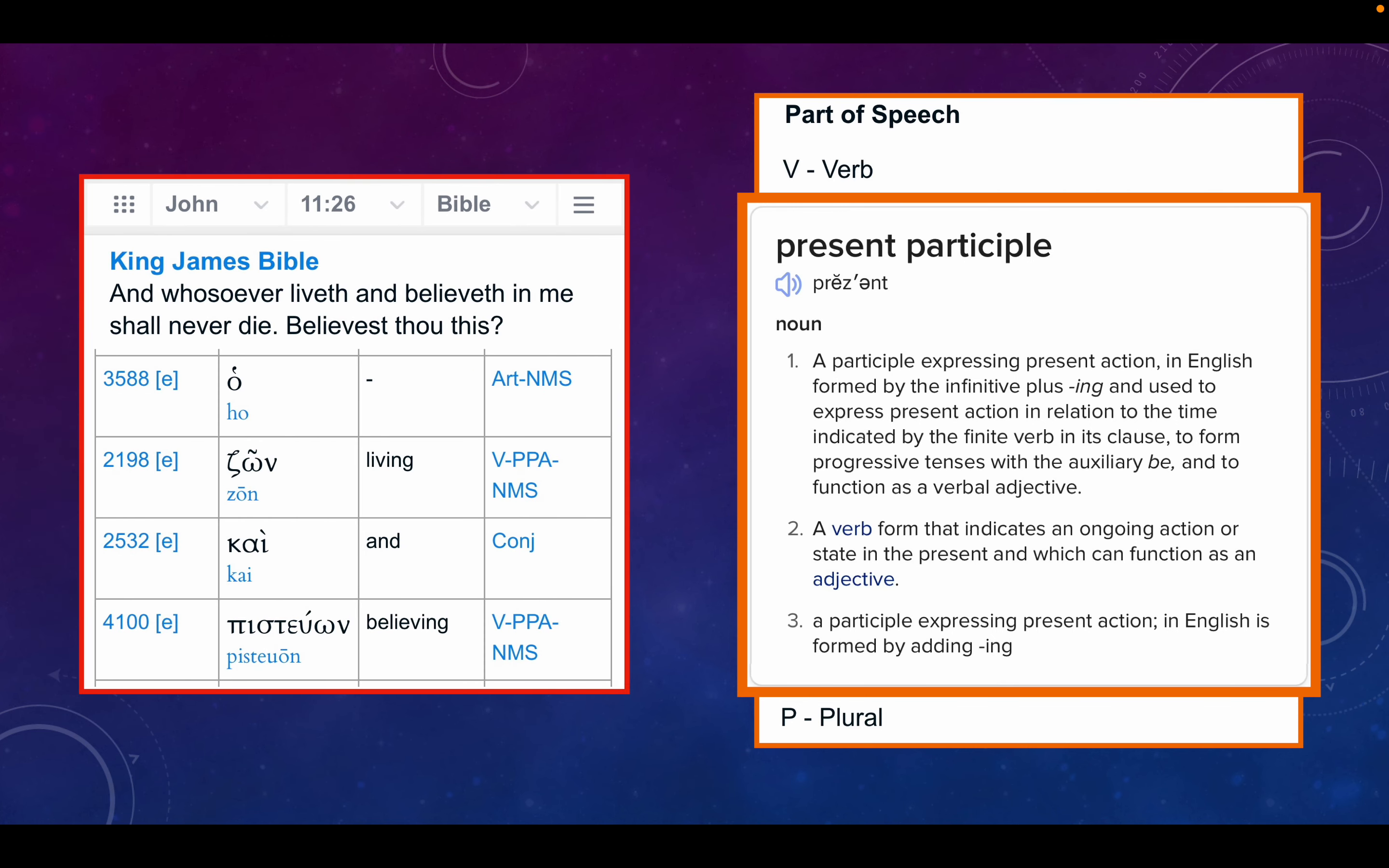John 11:26. And whosoever liveth and believeth in me shall never die. Believeth thou this? O zoin kai pisteon, the one living and believing, present participle.